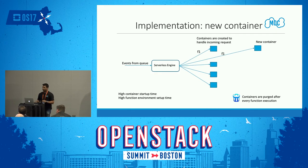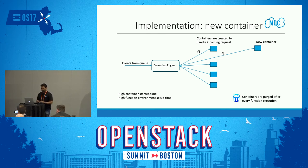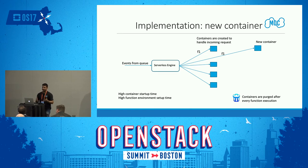The core part of the whole design is how we create the containers. The simplest way is to create a container for running each event function handler that comes as an event. When the engine gets a request, it creates a new container and purges the container after the function execution has been completed. This gave us an execution time of nearly four seconds, but it comes with a container startup time and a very high function environment setup time.